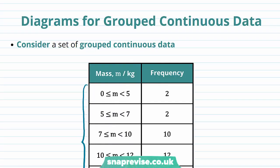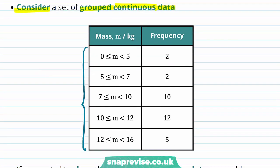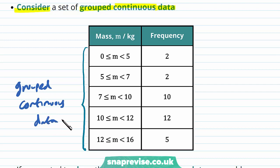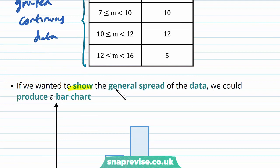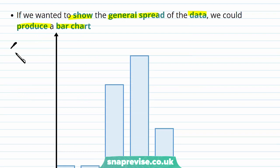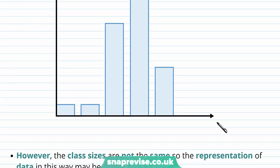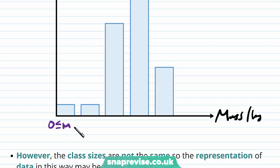So what diagrams can we use for grouped continuous data? Consider a set of grouped continuous data — here we have an example where the data is given by classes. If you wanted to show the general spread of the data, we could produce a bar chart with frequency on one axis and mass in kilograms on the other, giving the classes. So we have 0 ≤ m < 5, then 5 ≤ m < 7.